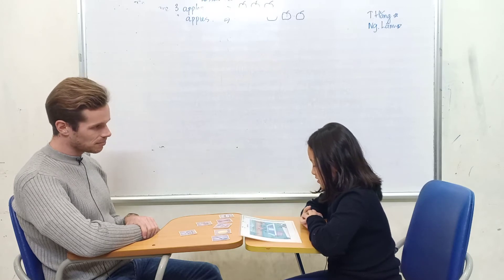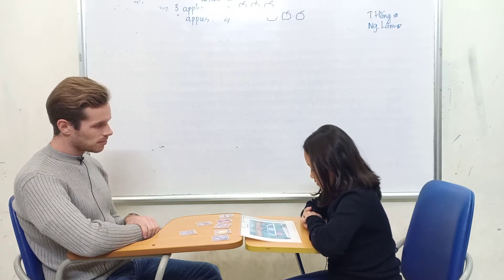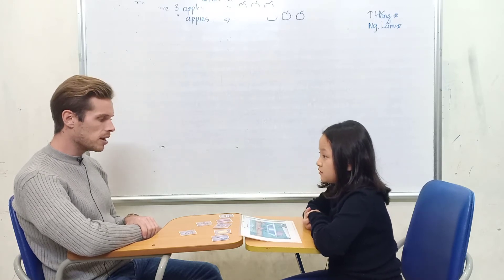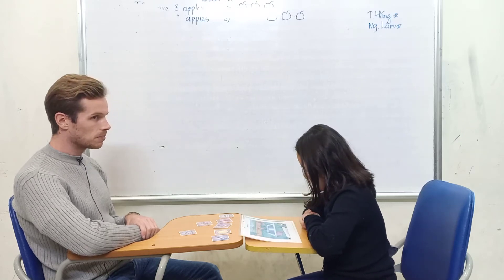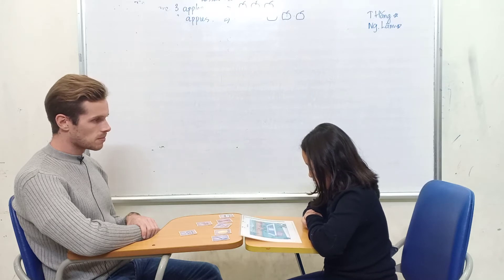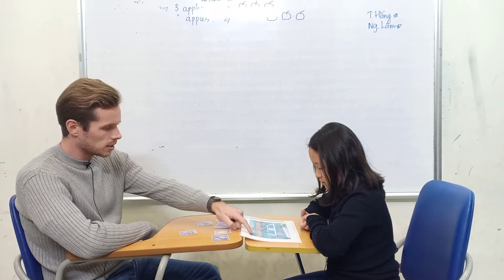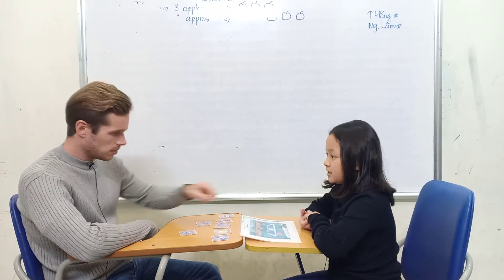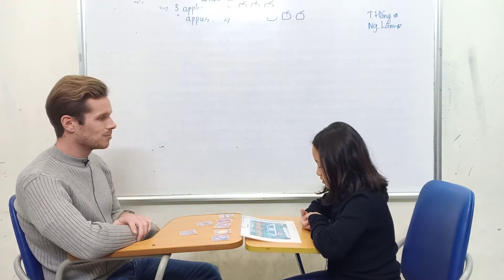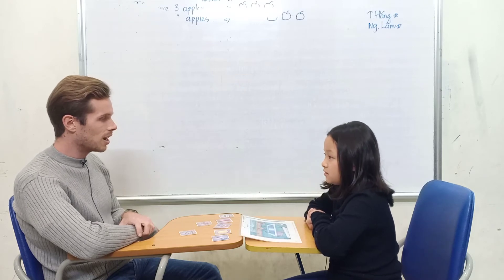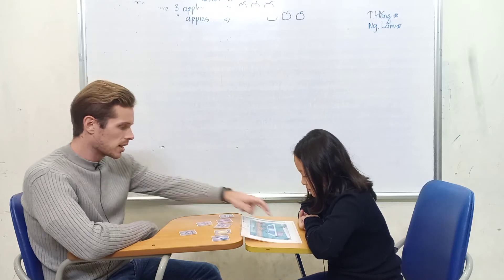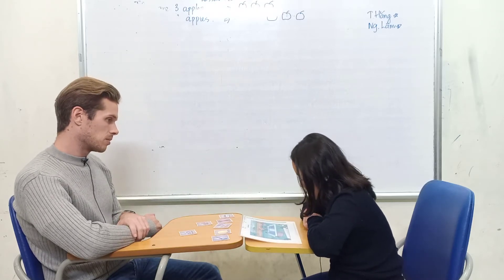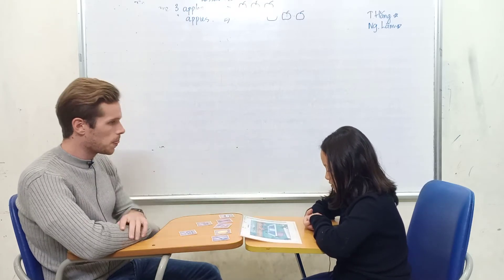What color are the flowers? Of yellow. How many are there? Three. What else do you see? What's this? Dinosaur. Crocodile. Crocodile. What color is it? It's green. It's green.